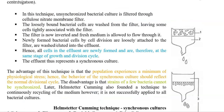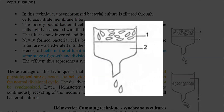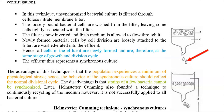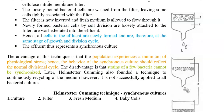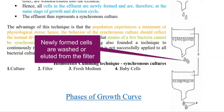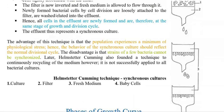In this technique, unsynchronized bacterial cultures are filtered through a cellulose nitrate membrane filter, as shown in the right-hand side diagram. Loosely bound bacterial cells are washed from the filter, leaving cells that are tightly associated with it. The filter is then inverted and fresh medium is allowed to flow over it. Newly formed bacterial cells produced by cell division are loosely attached and can be easily washed or eluted into the effluent. Hence, all cells in the effluent are newly formed and are at the same stage of cell division and growth.